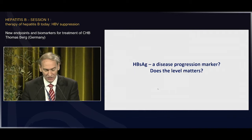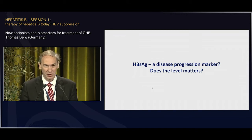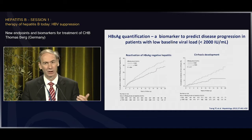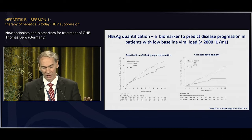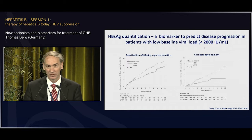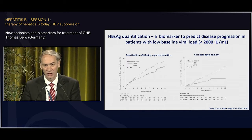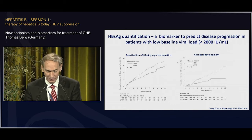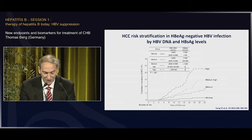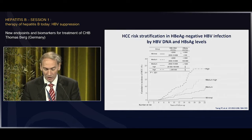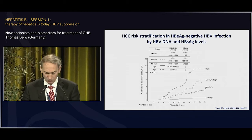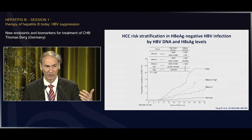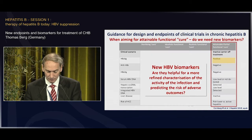Can we use levels of HBsAg as a progression marker in the same way? Does the level of HBsAg matter? The answer is probably yes for patients with low HBV DNA levels. If you look at an untreated cohort with less than 2,000 HBV DNA, it matters whether you have high or low HBsAg — here with a cutoff of 1,000 — with respect to reactivation into HBeAg-negative hepatitis or cirrhosis development. And when you look at the risk of HCC, if you have low HBV DNA and very low HBsAg levels, you are in the minimal risk group for developing HCC. These are all studies done in untreated patients, describing the natural course of inactive carriers or HBeAg-negative infection.